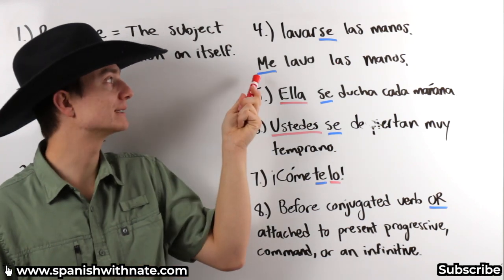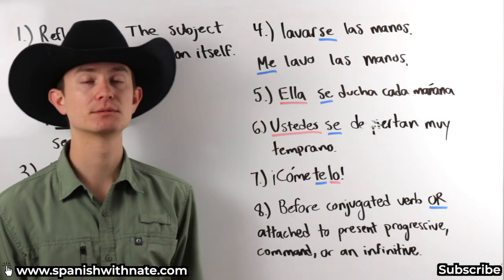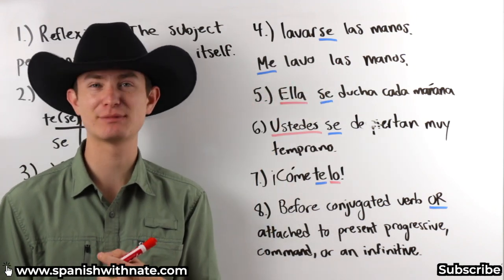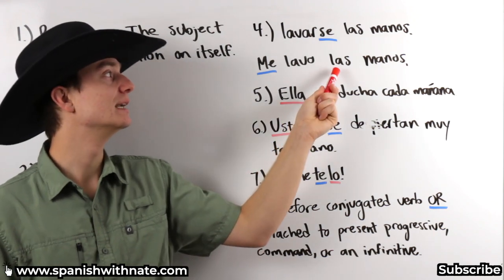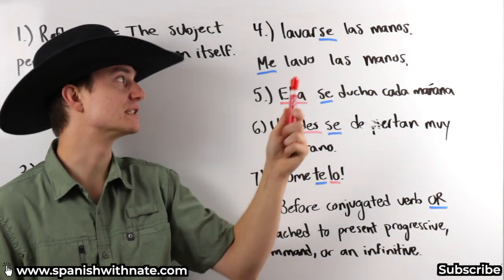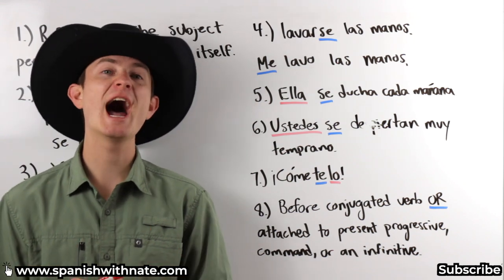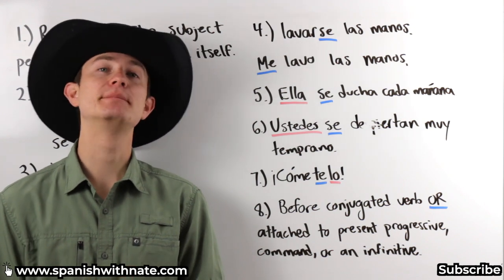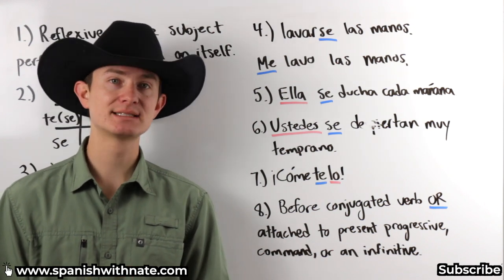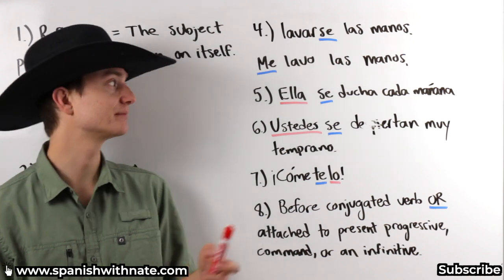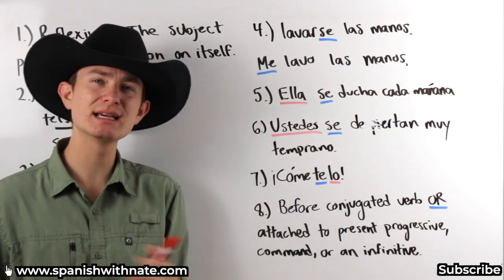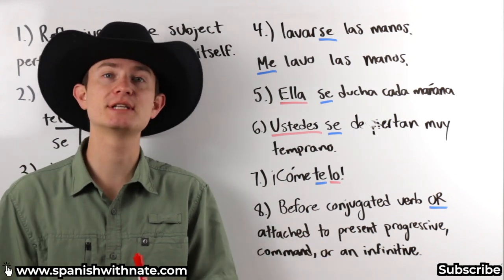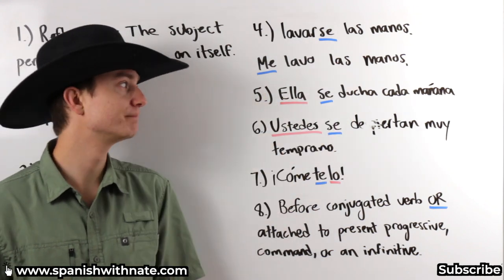Lavarse las manos. For example, me lavo las manos. I wash my hands. Now, notice how it's not me lavo mis manos, right? That would make sense. Me lavo mis manos. I wash my hands myself. My hands, it just doesn't sound good. You're going to use las. As opposed to mis. For example, I brush my teeth. Me lavo los dientes. It wouldn't be me lavo mis dientes. That's important to understand. Me lavo las manos. If you make that mistake when you're speaking with someone, it's not going to be a big deal. They'll totally understand what you're saying. However, the proper way is to say it this way.